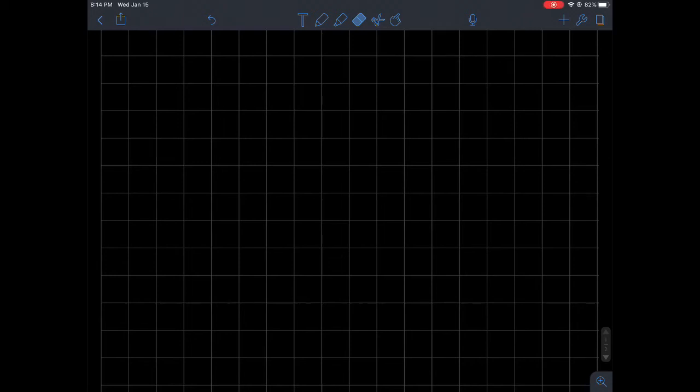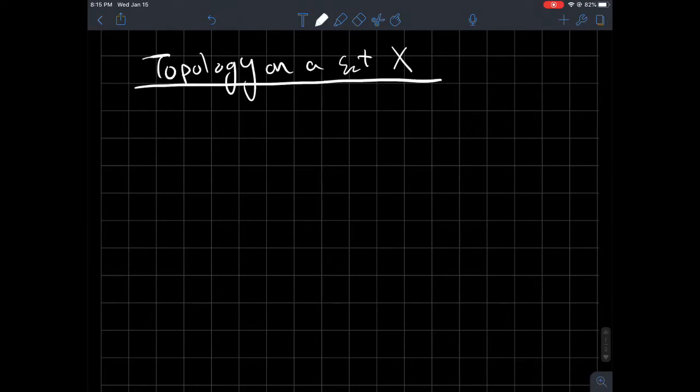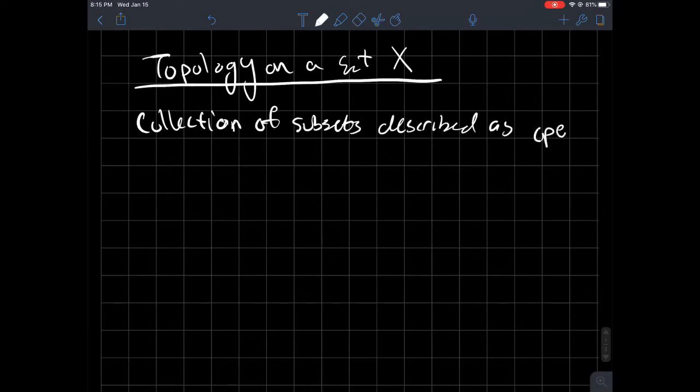This is a short video on what a topology on a set X is. So a topology on a set X. And so what it is is it is a collection of subsets that we are going to describe as open. Collection of subsets that are described as open.